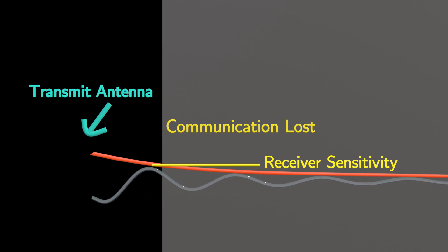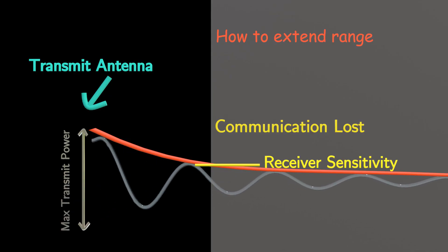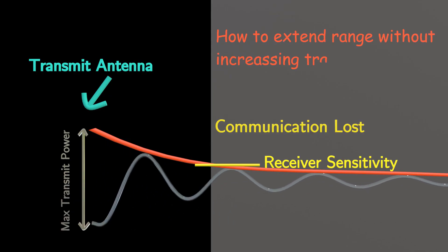Usually, increasing transmit power helps extend range, but there's a limit to how much power we can use. So how can we extend the range without increasing transmit power?